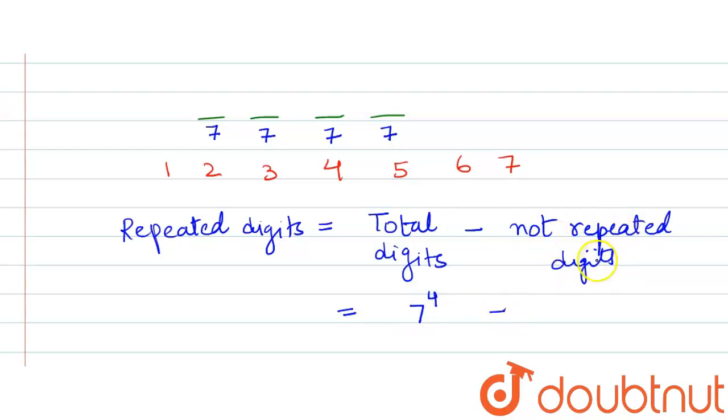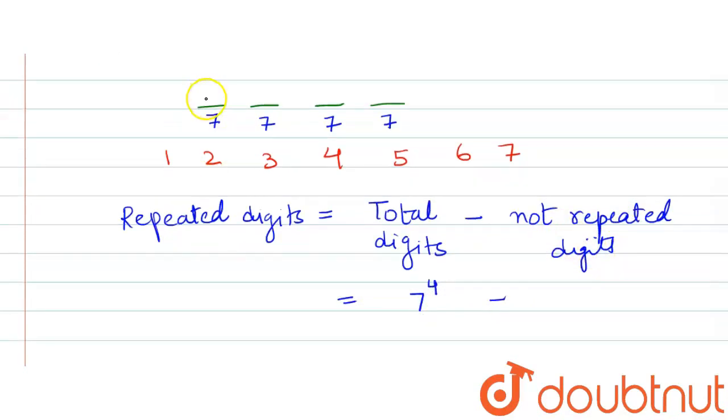And to find the non-repeated digits, which means first here the possibility is 7. In second position, there will be 6 possibilities. After that 5 and 4. So, in non-repeated digits, 7 into 6 into 5 into 4.